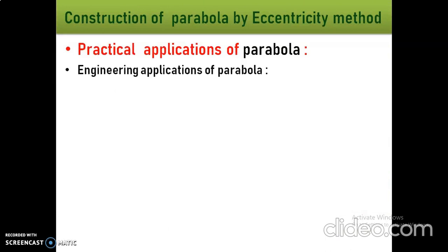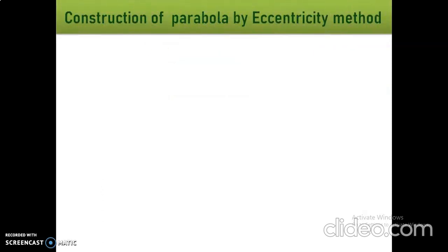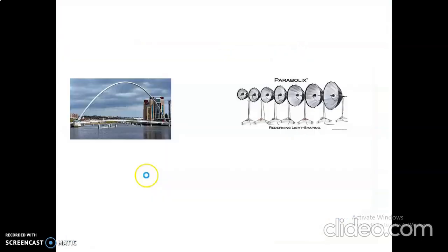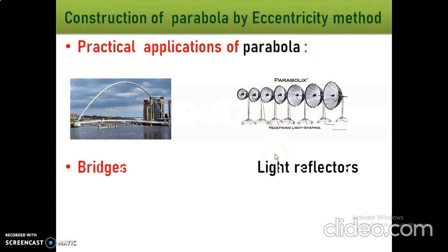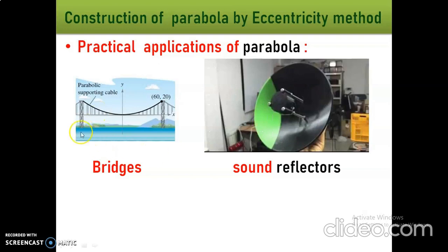Next topic: practical applications of parabola. The parabola shape is used in the construction of light reflectors, sound reflectors, arches, and bridges. These are some practical applications. For bridges, the parabolic shape is used. Also in manufacturing light reflectors, parabolic supporting cable, and sound reflectors — all are in parabola shape.